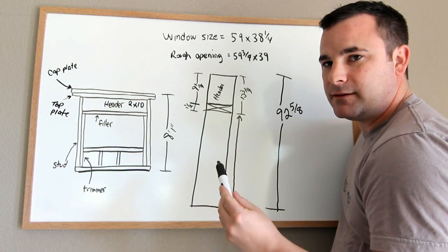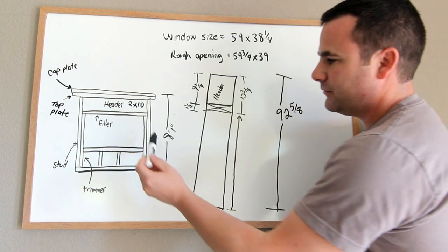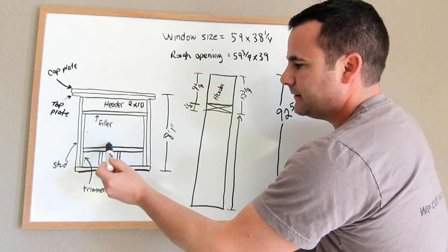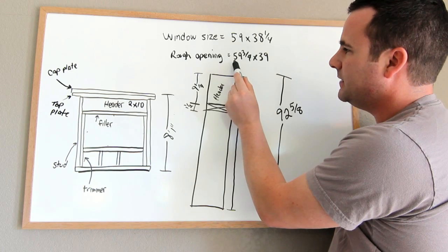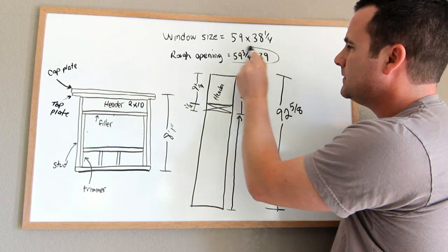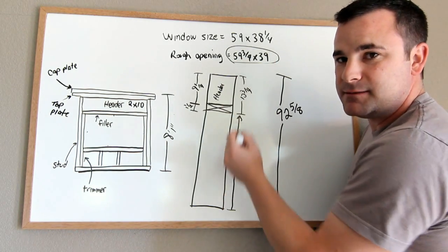And then in order to make the rough opening, you have to add 3/8 inch all the way around. So my rough opening will be 59 and 3 quarters by 39. Now the 39 is my height.